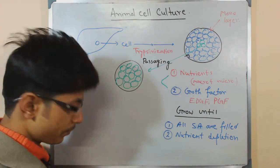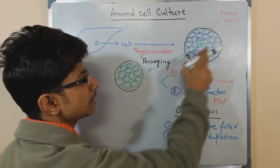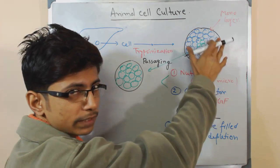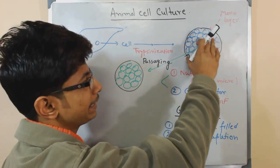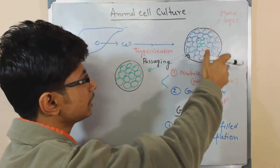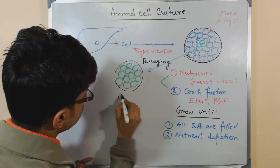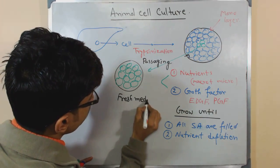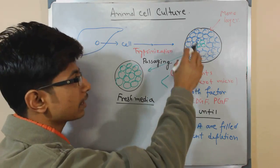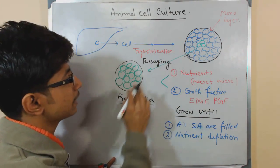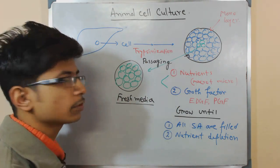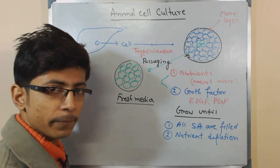Passaging is important once the previous medium becomes confluent — meaning all the nutrient sources and surface area of that medium are already taken up by the cells. Once the cells approach confluency, we take them and transfer them to a fresh medium. This process — taking cells from a confluent medium and putting them into fresh media — is called passaging, and it allows us to continuously study and grow the cells in the lab.